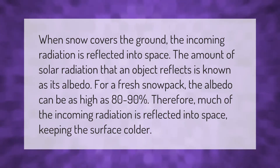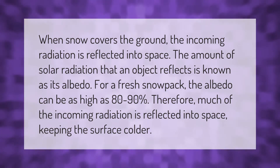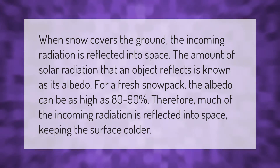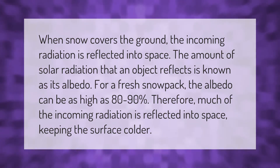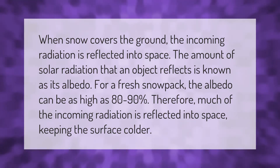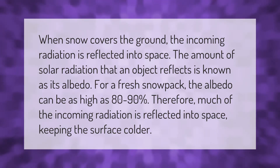When snow covers the ground, the incoming radiation is reflected into space. The amount of solar radiation that an object reflects is known as its albedo. For a fresh snowpack, the albedo can be as high as 80 to 90 percent. Therefore, much of the incoming radiation is reflected into space, keeping the surface colder.